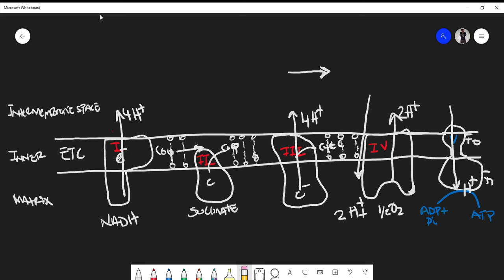In the electron transport chain mitochondria, we have four complexes. Essentially we are using electrons, taking energy from the electrons to pump H+ ions from the matrix into the intermembrane space.